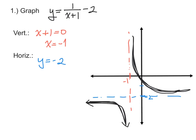For a more accurate sketch, set up an x-y table and plot some points. For example, find the y-intercept by plugging in x equals 0: that gives 1 over 0 plus 1 minus 2, which equals negative 1. So the y-intercept is at negative 1. You can then adjust the graph to fit that point more closely, and the more points you plot, the more accurate your graph will be.